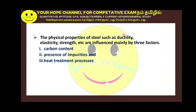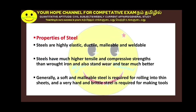The physical properties of steel — such as ductility, elasticity, and strength — are influenced mainly by three factors: carbon content, the presence of impurities, and the heat treatment process. There are hot-drawn and cold-drawn conditions which alter steel properties. Steel is highly elastic, ductile, malleable, and weldable.